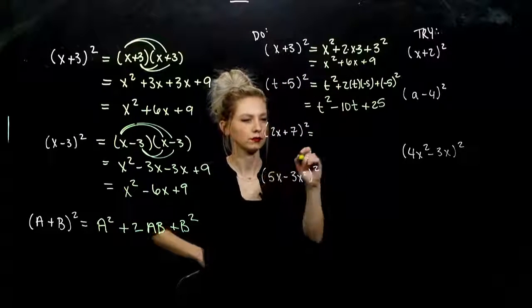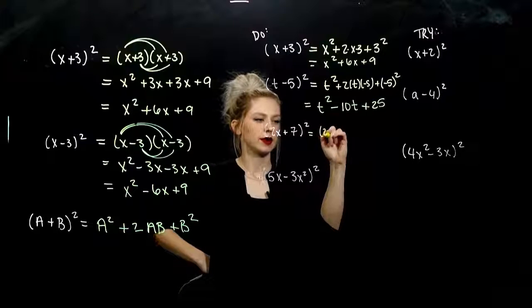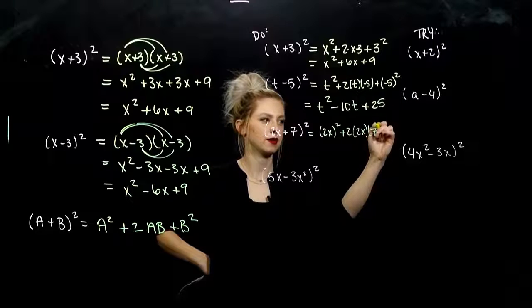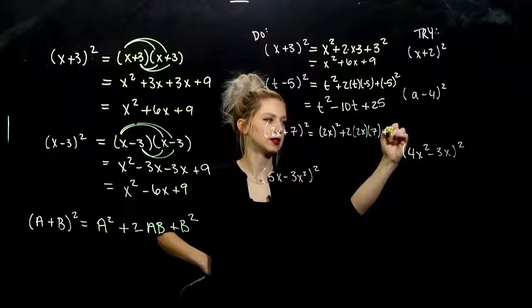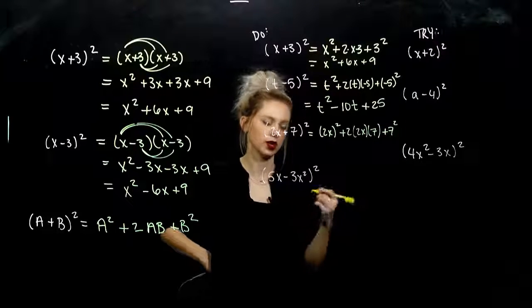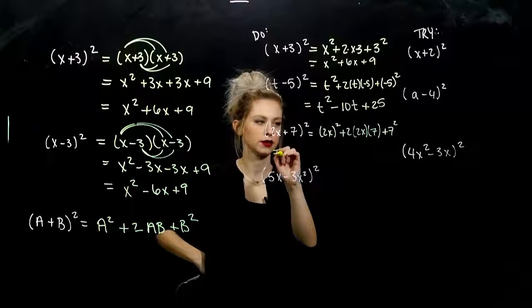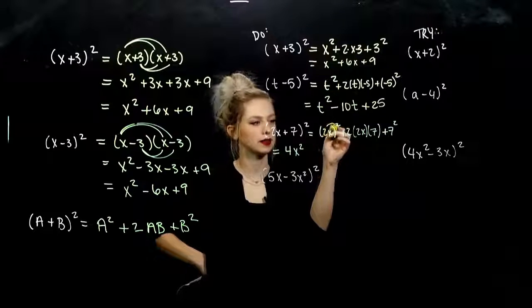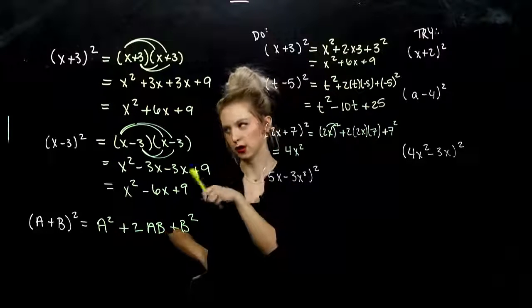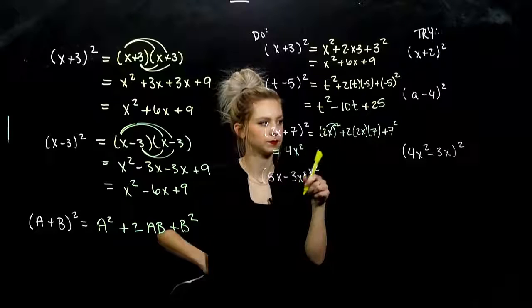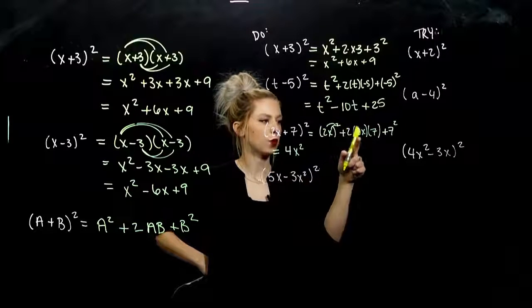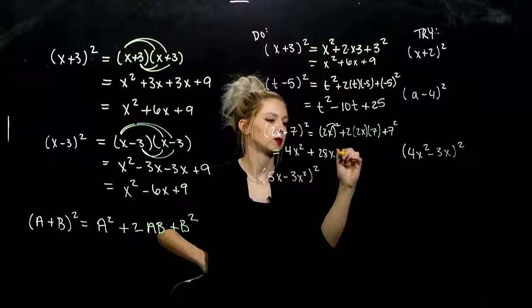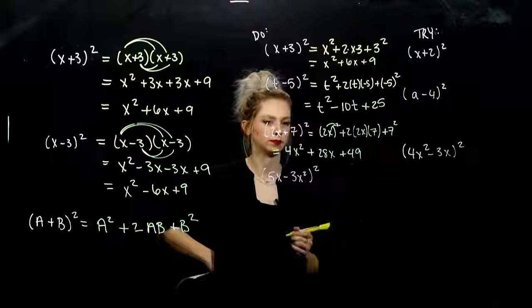Next one. First one squared plus 2 times the first times the second plus the last bit squared. If you're not comfortable with these, foil them out. Get some practice. We're looking at 4X squared. When we have a product in there, we do need to distribute to each. But we can't with a sum or difference. And I'm looking at 4 times 7 will give me 28X plus 49. Pretty quick.